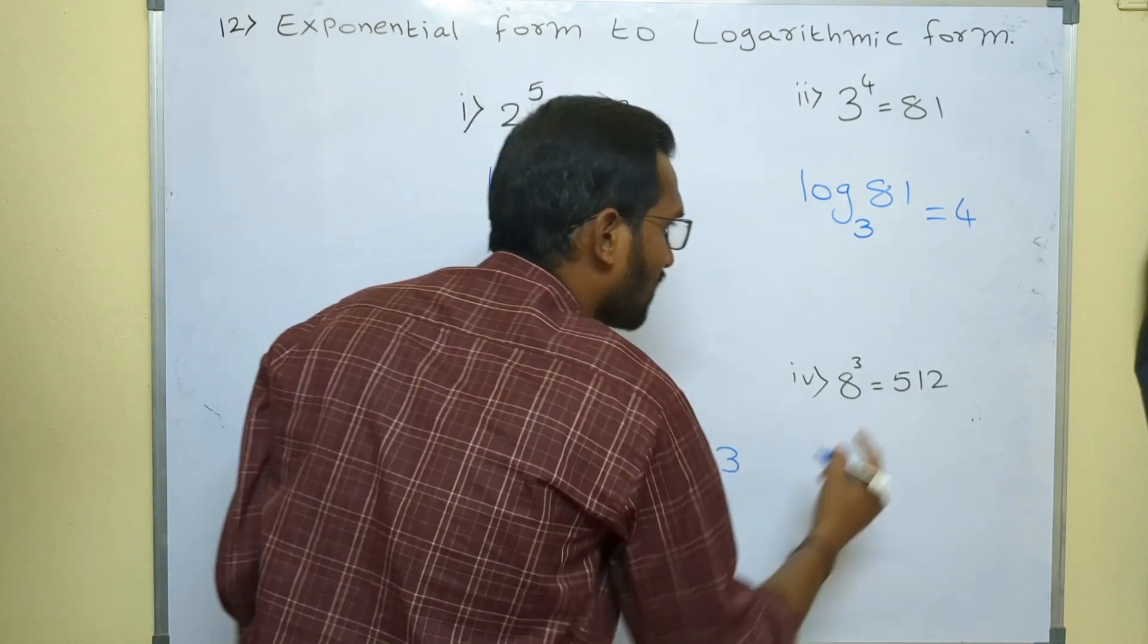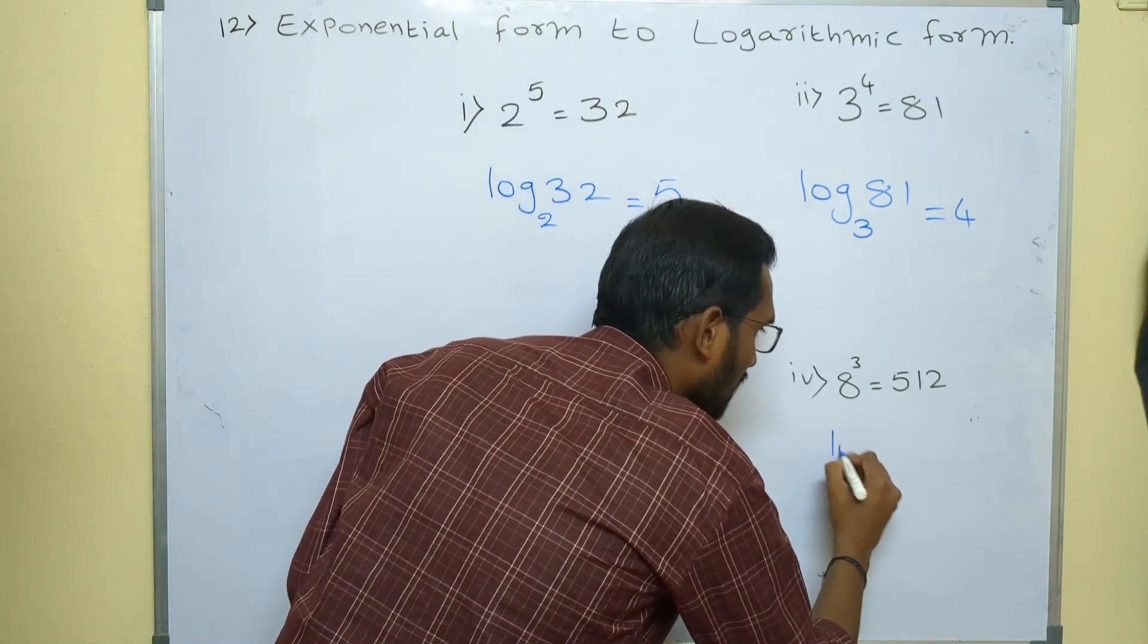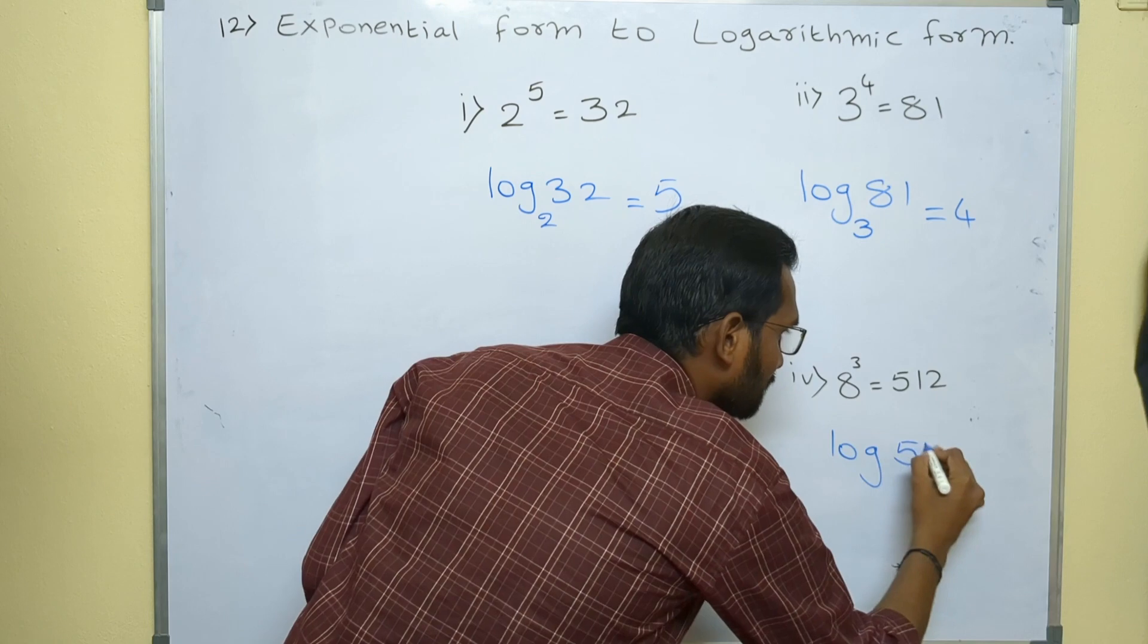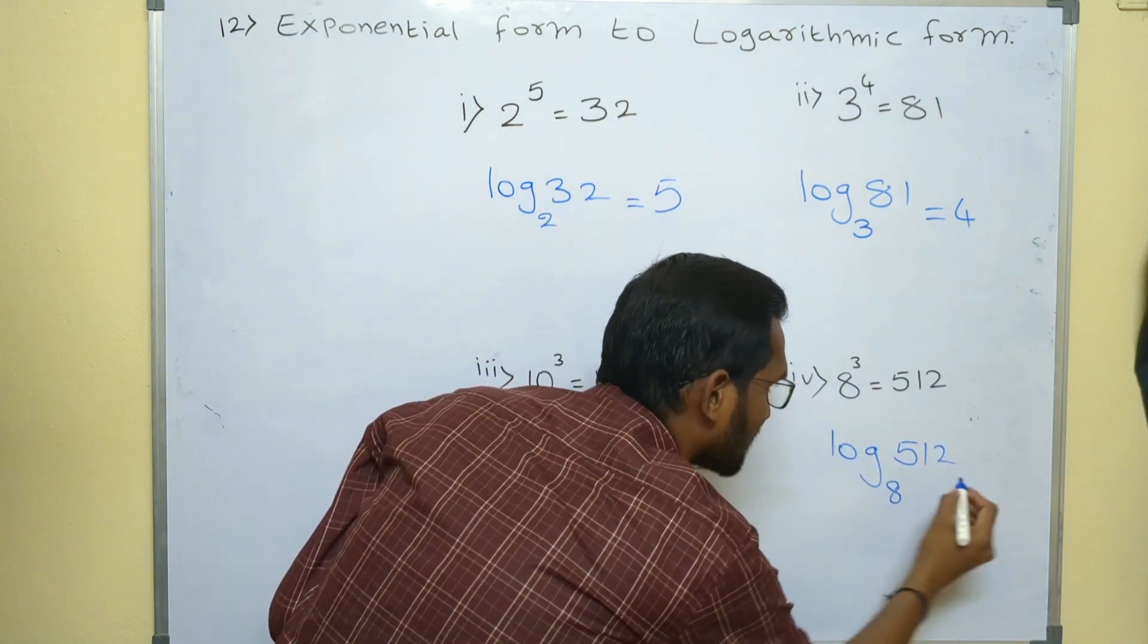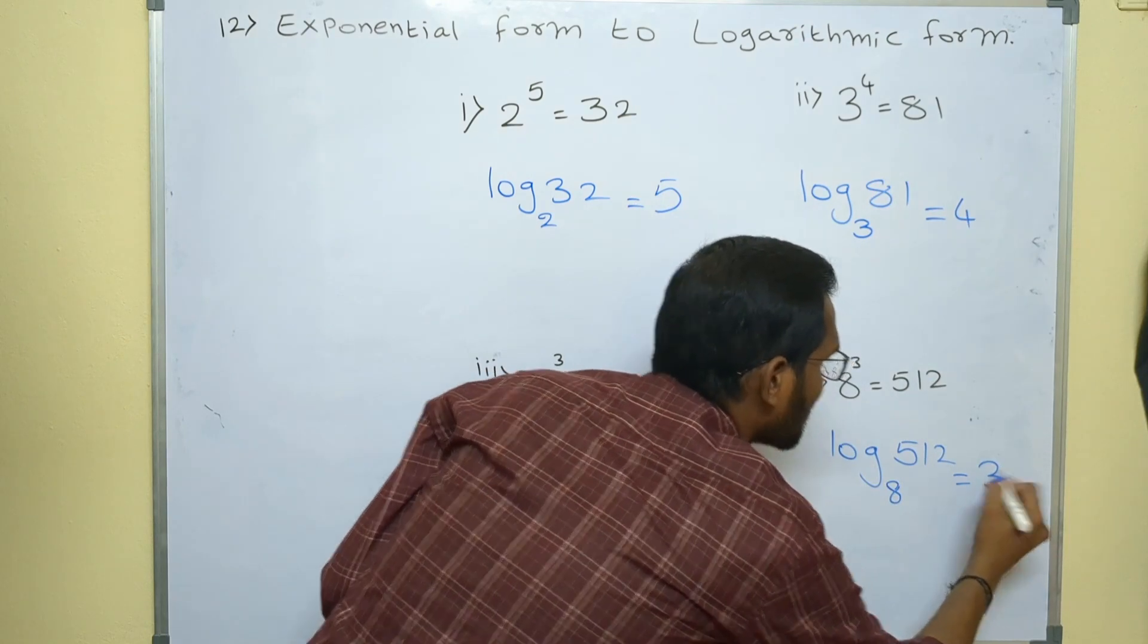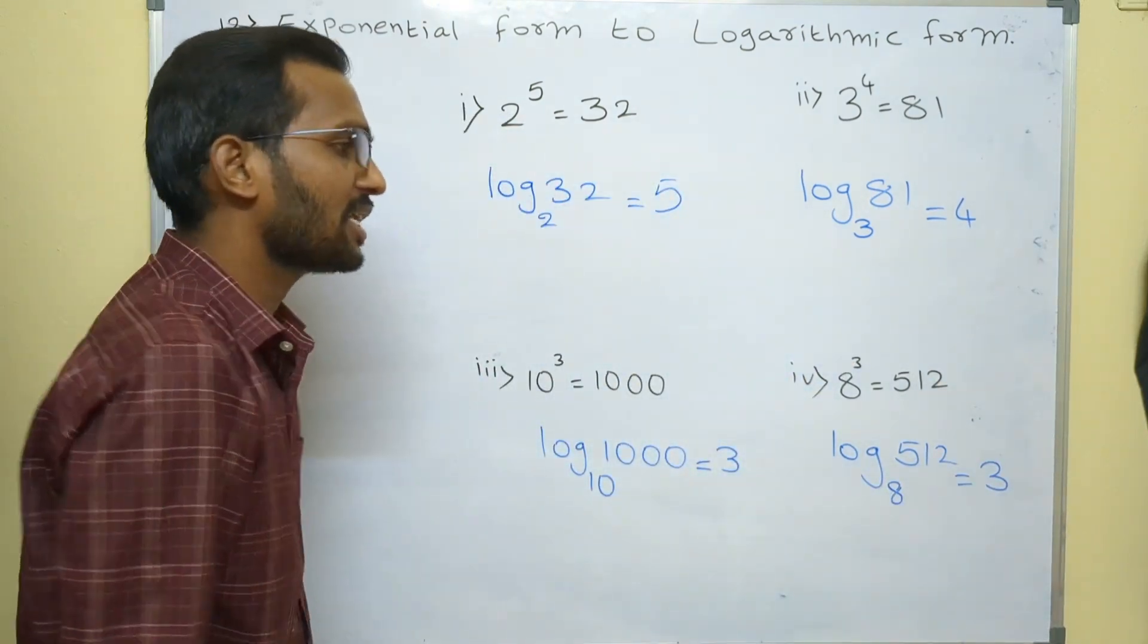8 power 3 equals 512. For 512 keep log, log 512. In 8 power 3, 8 is the base, right. Write as it is as the base equals to power as the answer. Log 512 base 8 equals 3.